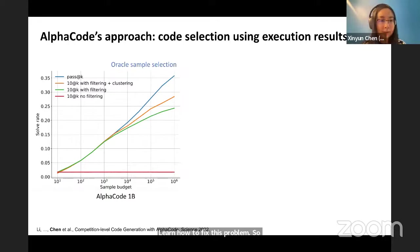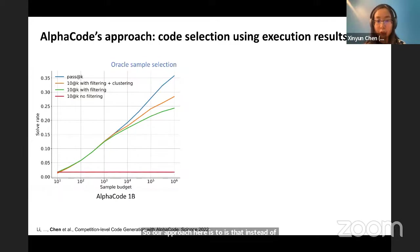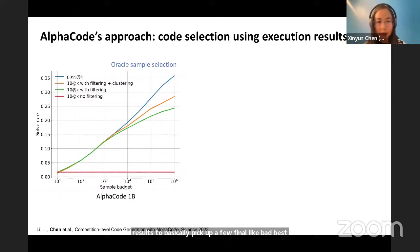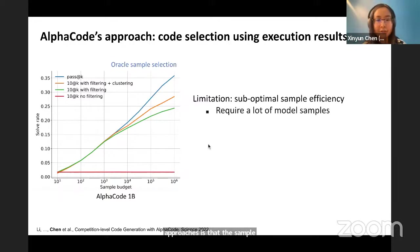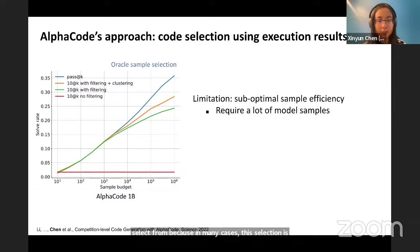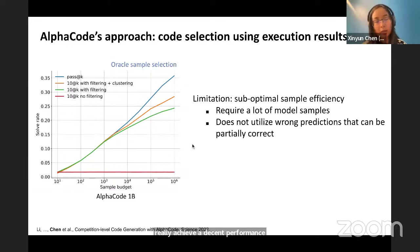Earlier, as a team member on the AlphaCode group developing a language model to solve competitive programming problems, our approach was that instead of generating just one solution per problem, we allow the model to generate multiple samples, then perform a code selection process based on execution results to pick a few final best responses. The main limitation of this approach is that sample efficiency is generally sub-optimal — it usually requires a lot of model samples to select from, and in many cases selection is based on majority voting, which by design needs multiple samples to achieve decent performance.